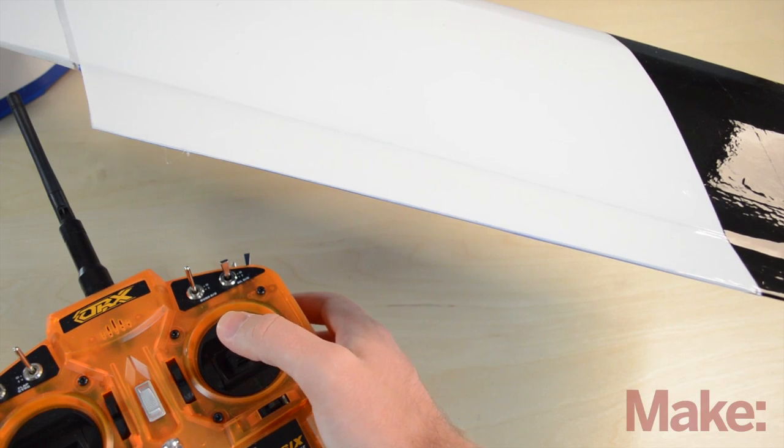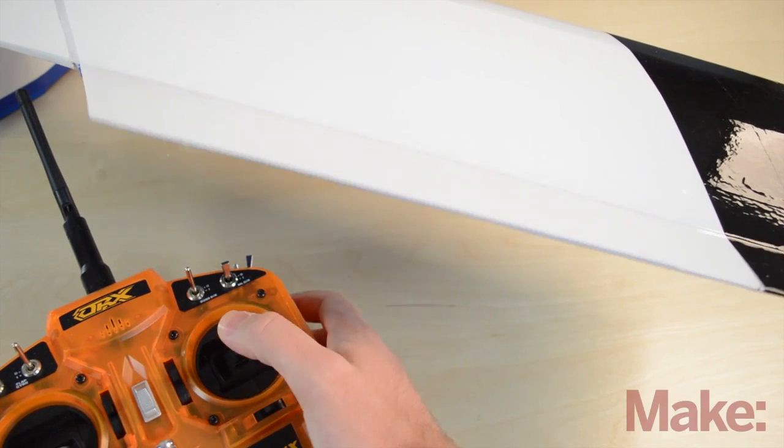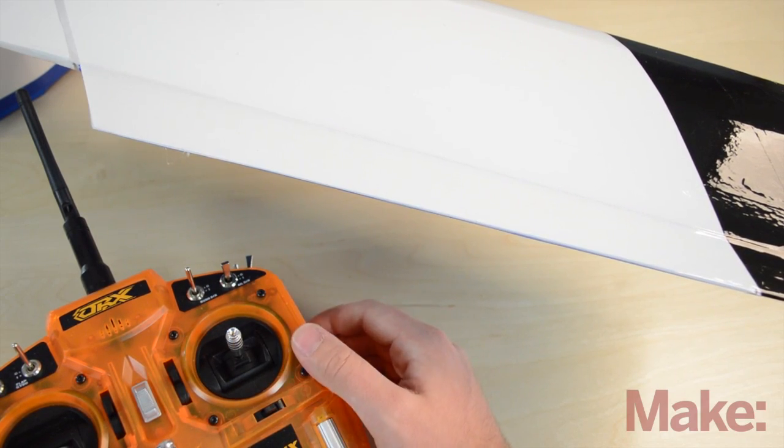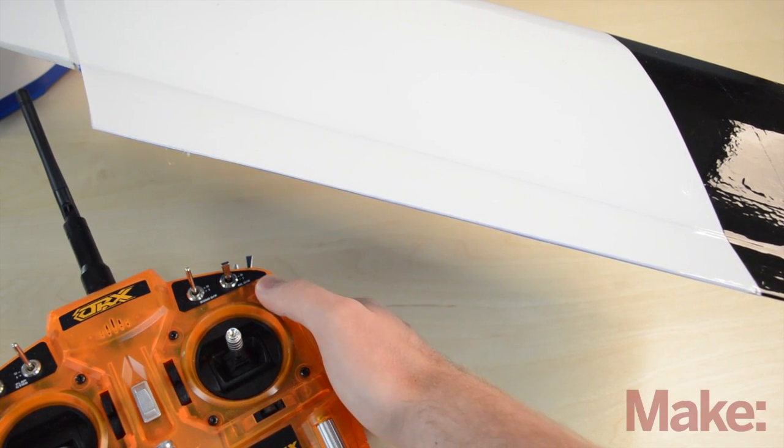The ailerons are set up so that they move 100 percent in either direction, but this is a little bit too much. So instead of doing a travel adjust, we're actually going to do dual rate so that we can get a different amount for these. So let me show you how to do that.